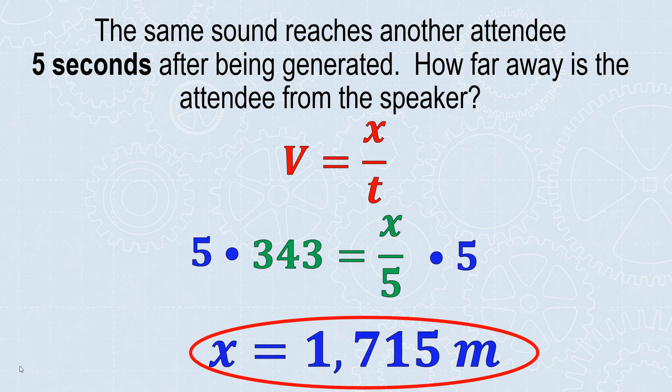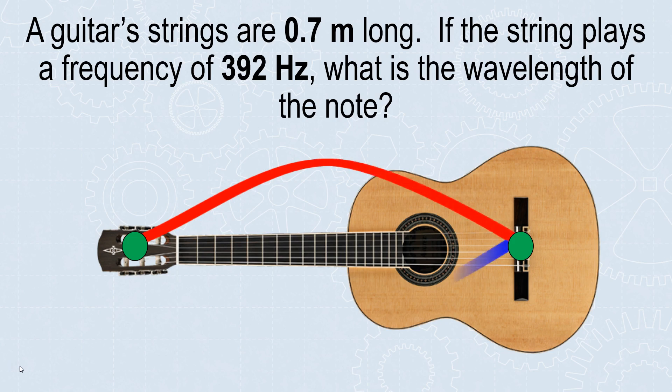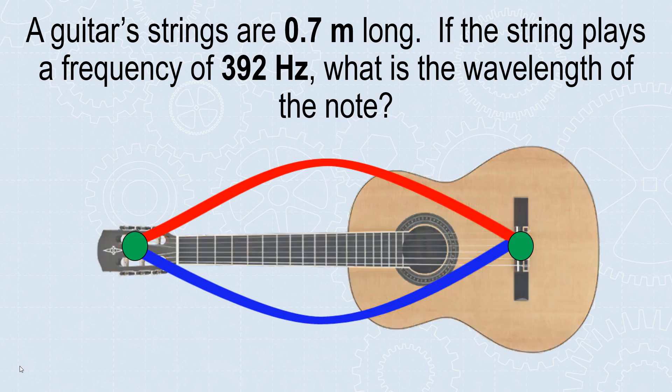A guitar's strings are 0.7 meters long. If the string plays a frequency of 392 Hz, what is the wavelength of the note? We need to look at the wave pattern first. Guitars start and end with nodes because there's no motion at the ends - the strings are held in place. In the middle, there's a big antinode because the strings can vibrate back and forth, creating destructive and constructive interference. I only see one crest, not a crest and a trough, so I have half of a wavelength.